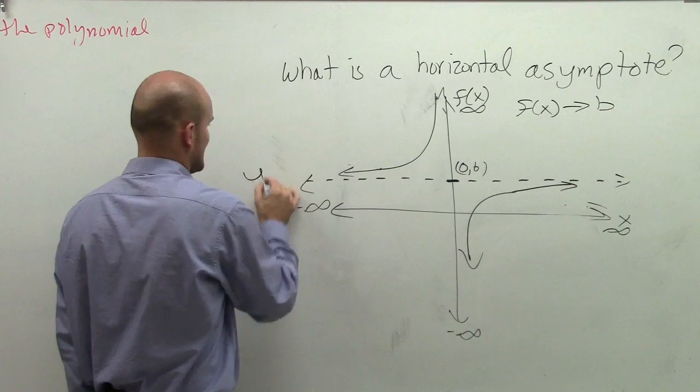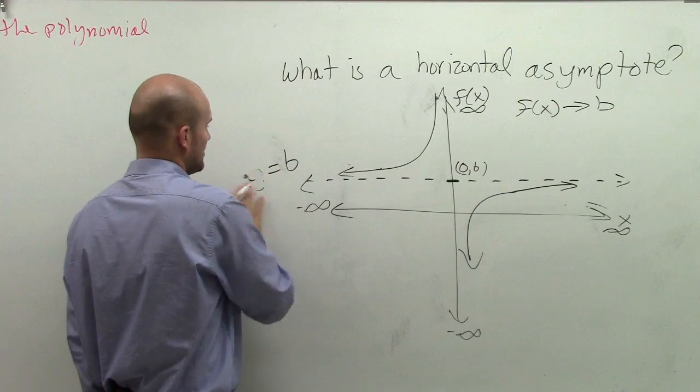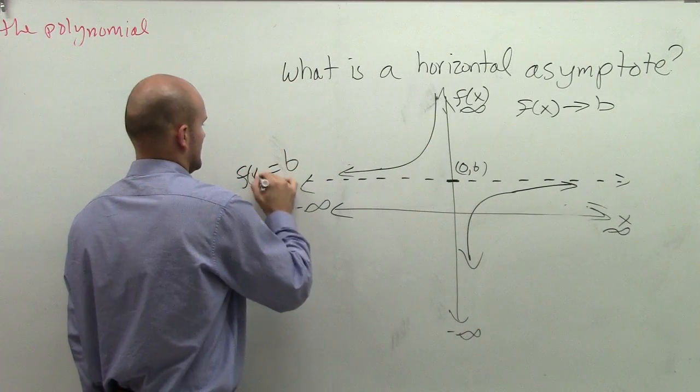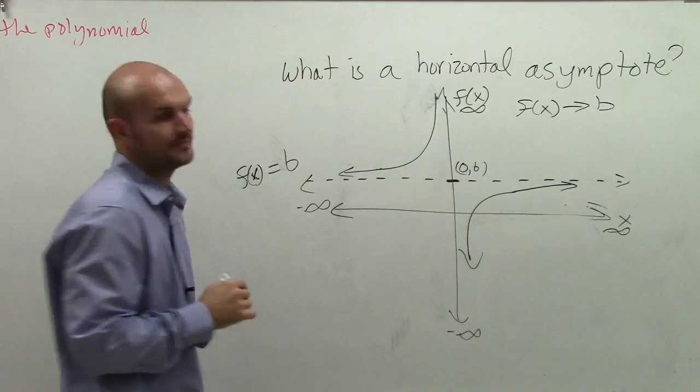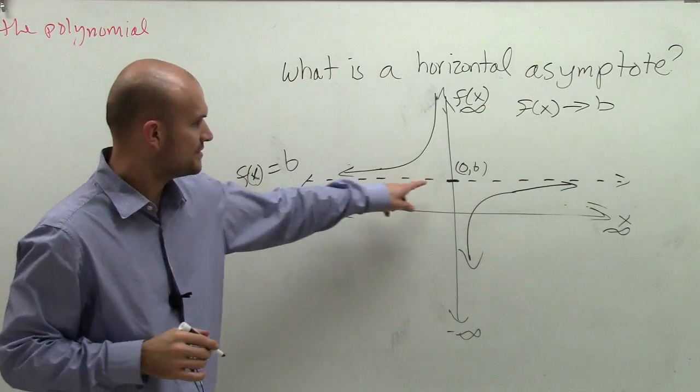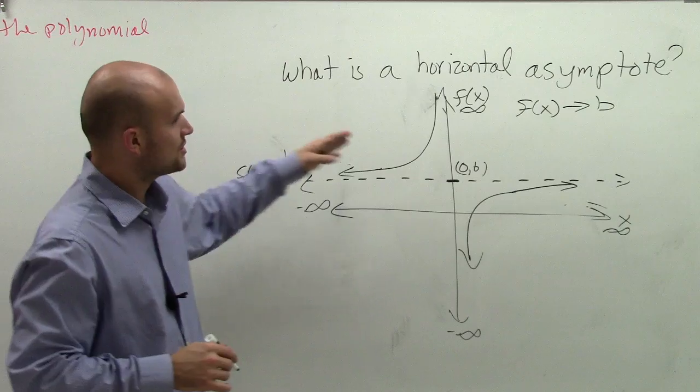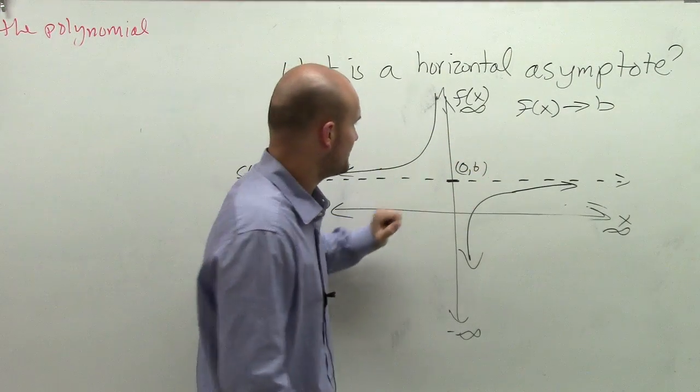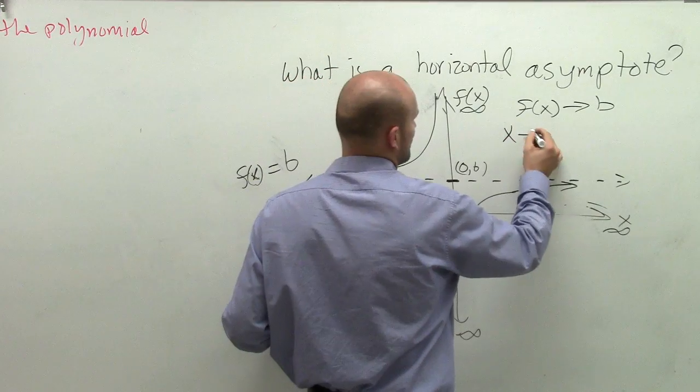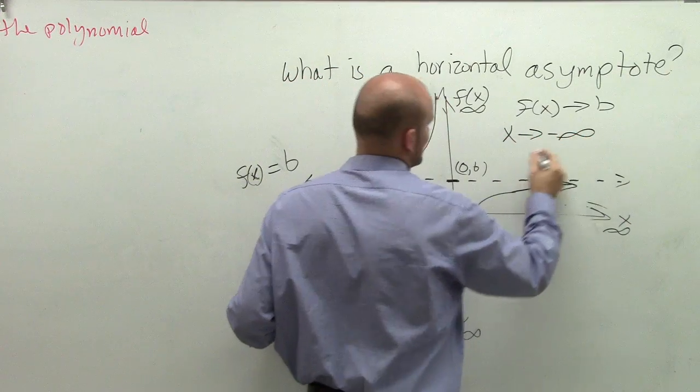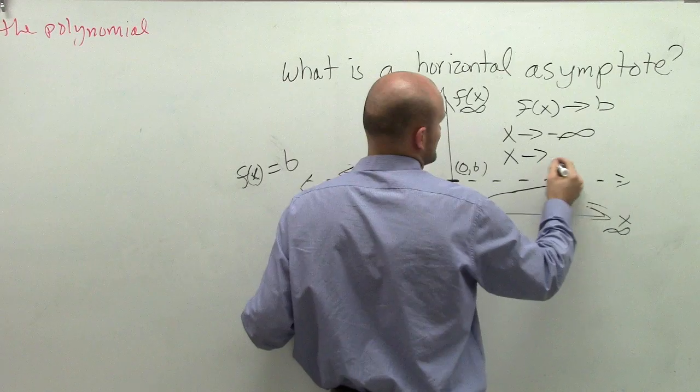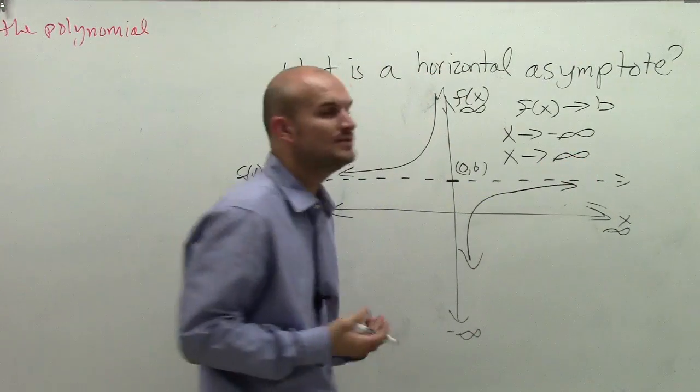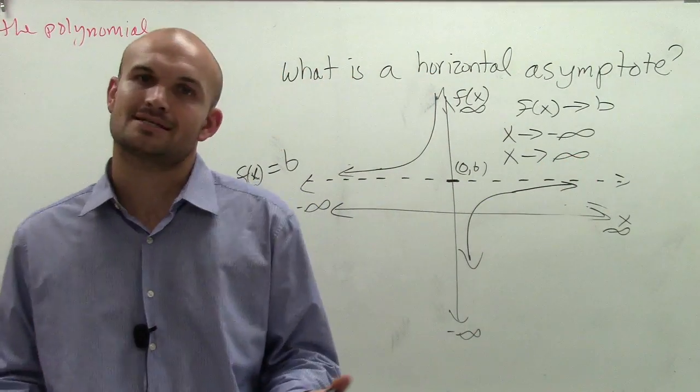So this line has the equation y equals b, or actually, f of x equals b. That's the equation of this line. So as f of x approaches b, if you have x approach negative infinity or x approach positive infinity, you have created a horizontal asymptote.